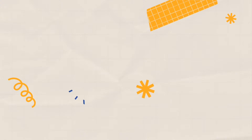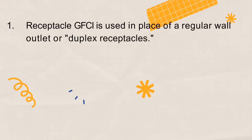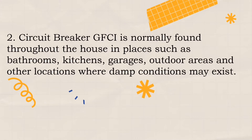Let us have another activity to know what you have learned. It is named 'Amo or Diri.' Amo means yes and Diri means no. You will write Amo if the statement is correct and Diri if it is not. Number 1: Receptacle GFCI is used in place of a regular wall outlet or duplex receptacles. Is it Amo or Diri? Very good. It is Amo.